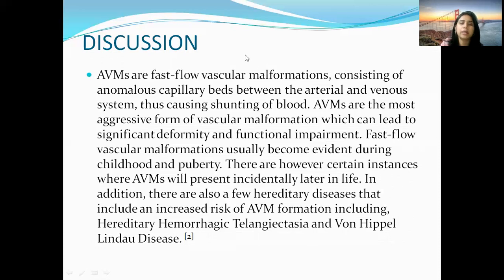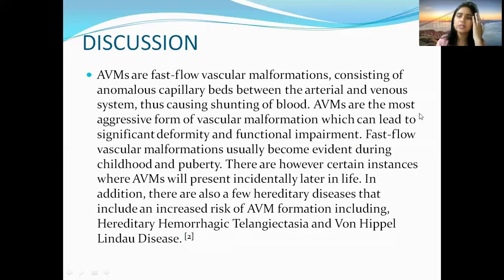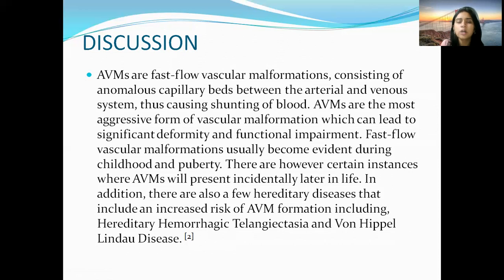In conclusion, AVMs are fast flow vascular malformations consisting of anomalous capillary beds between the arterial and venous system, causing shunting of blood. They are the most aggressive form of vascular malformation, which can lead to significant deformity and functional impairment. Fast flow vascular malformations generally become evident during childhood and puberty, though some cases present very late and are incidentally detected. Additionally, hereditary diseases such as HHT and VHL disease are associated with increased risk of AVM formation.